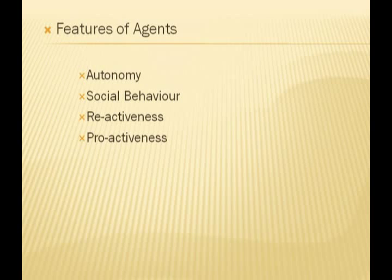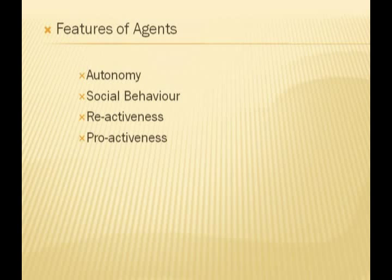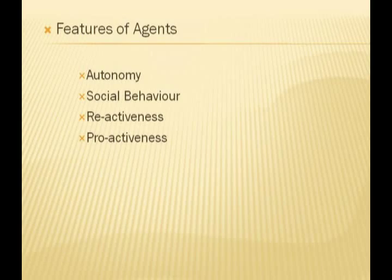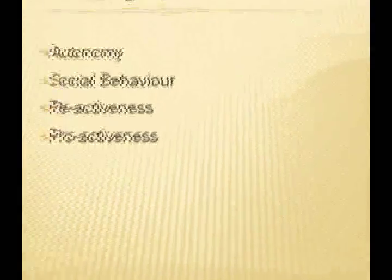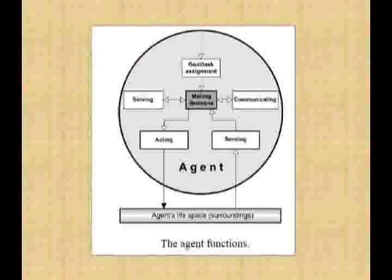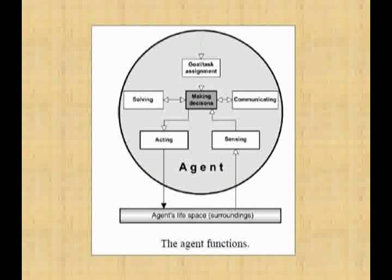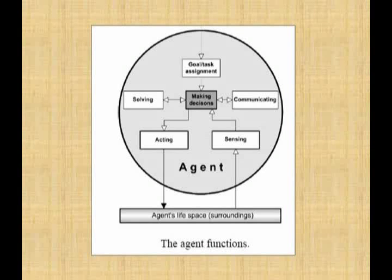Proactiveness means that an agent is able to act with initiative and goal orientation. Another important feature is that agents are able to improve their behavior continuously since they have the ability to learn, so their behavior improves with increasing experience. A little bit about the agent functions can be understood through this diagram.